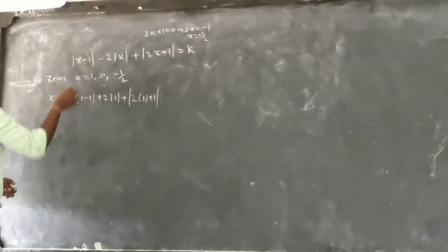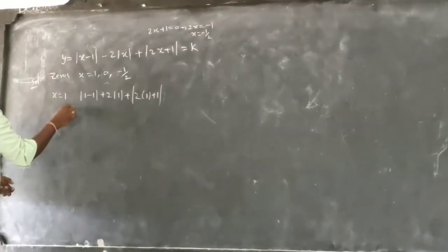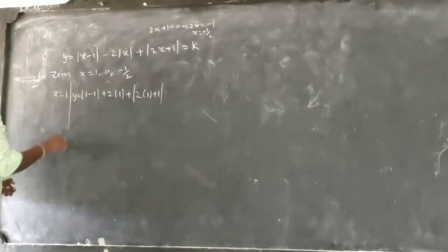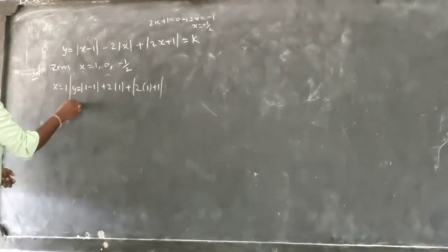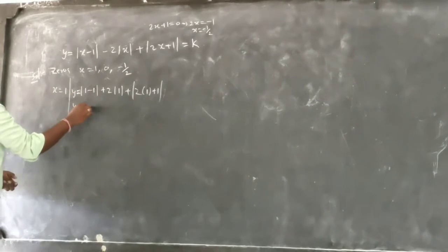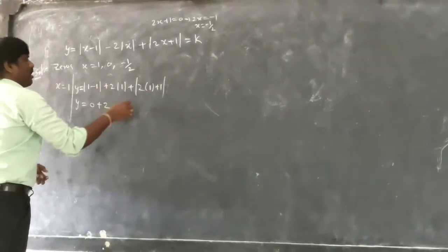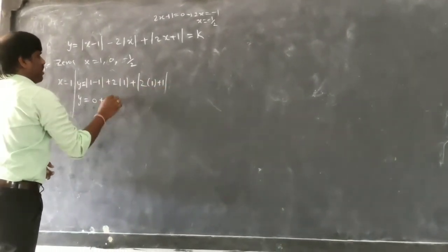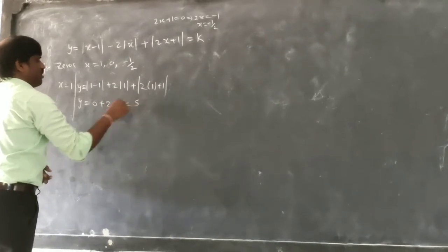Let us take x equal to 1 and substitute. We get: mod(1-1) minus 2·mod(1) plus 2·mod(1+1), which is 0 plus 2 plus 3, so y equals 5.